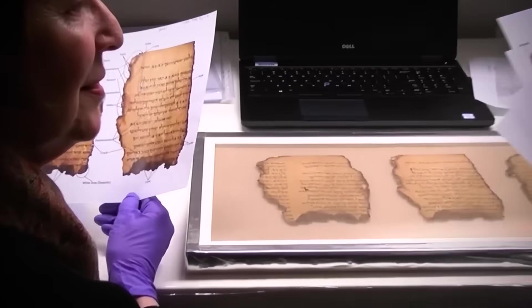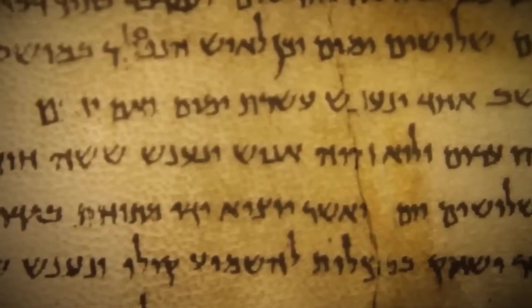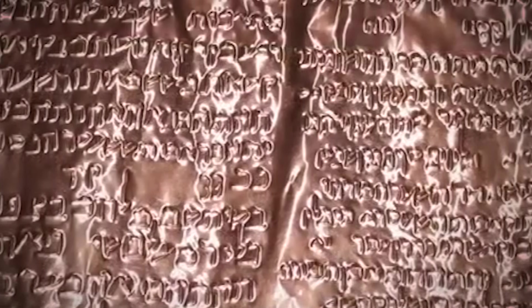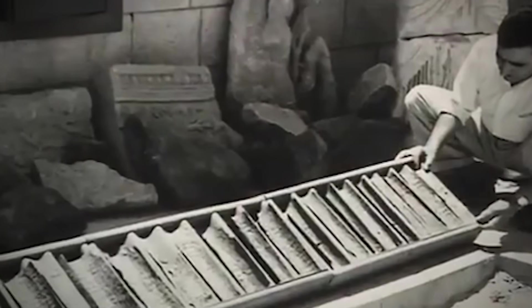The Dead Sea Scrolls have fascinated us for decades. But one stands apart. The Copper Scroll. Unlike its papyrus siblings, this metallic mystery was literally carved into sheets of copper 2,000 years ago.